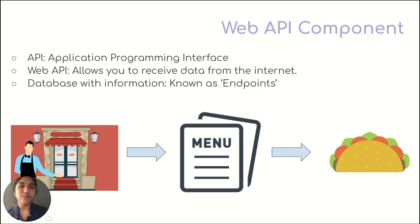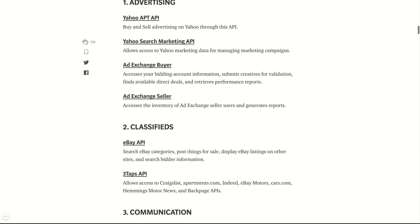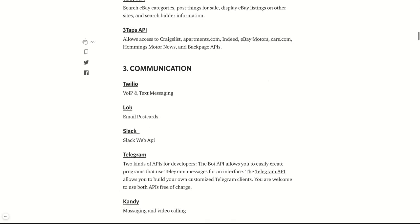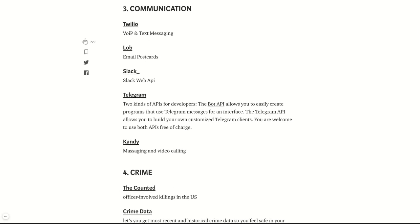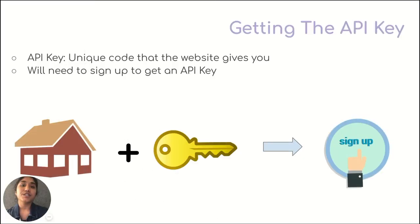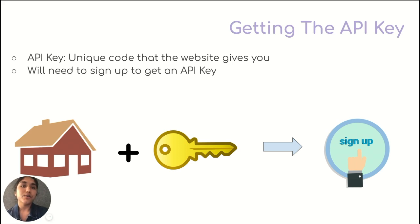In the description box below, we've included a link to examples of Web APIs, including data sources like YouTube, Yelp, or The Weather. To use most public APIs, you will probably be required to sign up on a website and get an API key. An API key is just a unique code that the website gives you. Most websites keep their data locked in a house — you can request an API key, which can unlock the door and get information for you to use in your app.